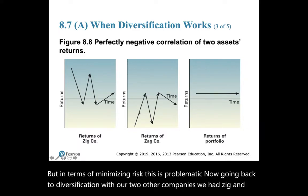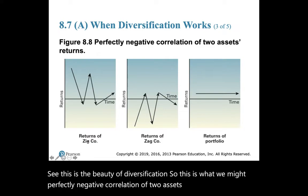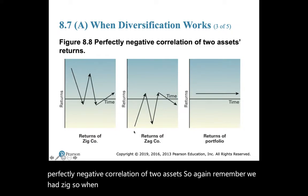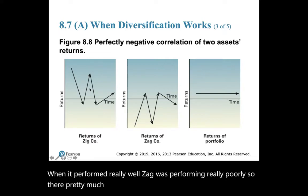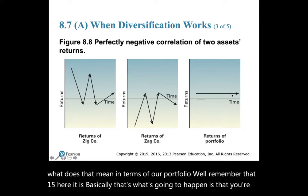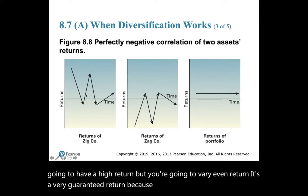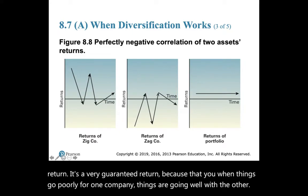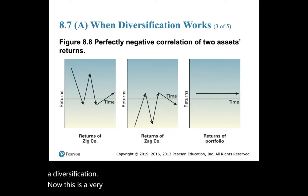Going back to Zig and Zag — this is the beauty of diversification. With perfectly negative correlation, when Zig performed poorly, Zag performed well, and vice versa. In terms of the portfolio, you get that flat 15% return. You won't have high spikes, but you'll have a very even, guaranteed return because when things go poorly for one company, things go well for the other. They're just balancing things out, and that's the idea of diversification.